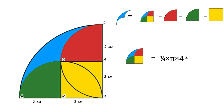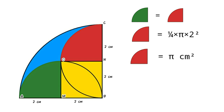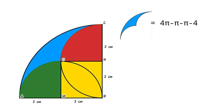Area of the bigger quarter circle equals (1/4) × π × 4² = 4π cm². From the figure, the area of the green quarter circle equals the area of the red quarter circle, which equals (1/4) × π × 2² = π cm². Area of the yellow square equals 2 × 2 = 4 cm². So area of blue region equals 4π − π − π − 4 = 2π − 4 cm².